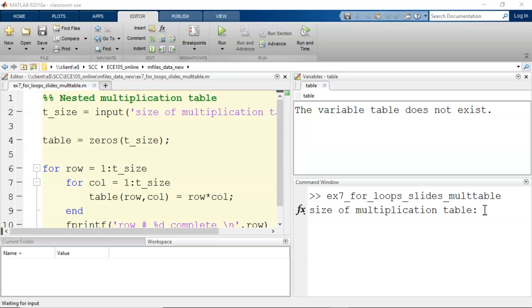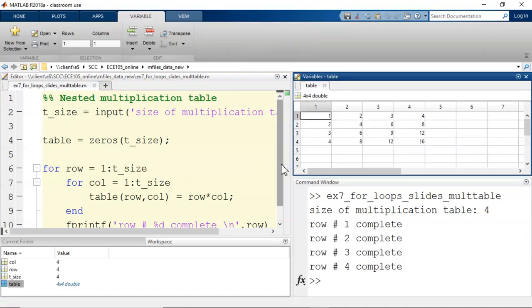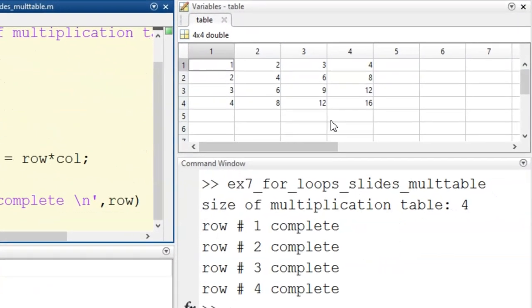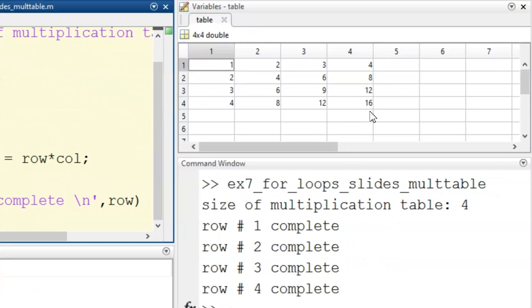We are prompted for the size of the table by this input command. I'll enter 4 to keep it small. Then, the for loops are processed quickly. I can see these update sentences that are printed. I can also see the final product, pun intended, in the variable editor, a nice 4x4 multiplication table.